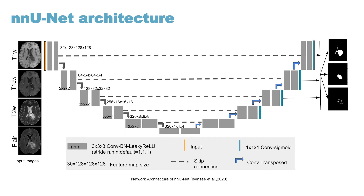At the final layer, when the model is trained, we get three tumor regions: whole tumor, tumor core, and enhancing tumor. During training, along with the final layer, we also used the two preceding layers for optimization.